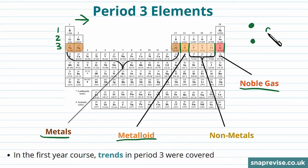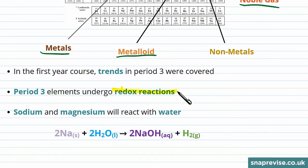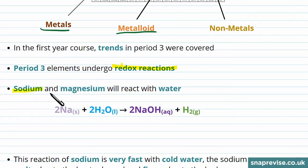The rest of period 3, so not argon, will undergo redox reactions. So sodium and magnesium will react with water.